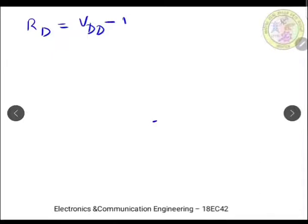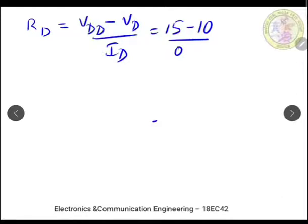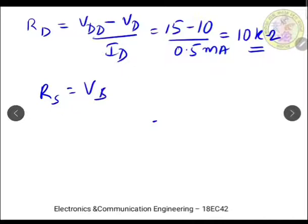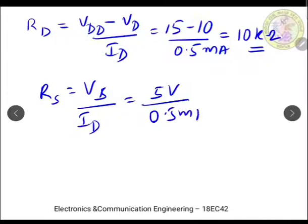The expression for Rd is: Rd = (Vdd − Vd) / Id = (15 − 10) / 0.5 mA = 10 kΩ. Similarly, Rs = Vs / Id = 5 V / 0.5 mA = 10 kΩ. So both Rd and Rs are 10 kilohms.